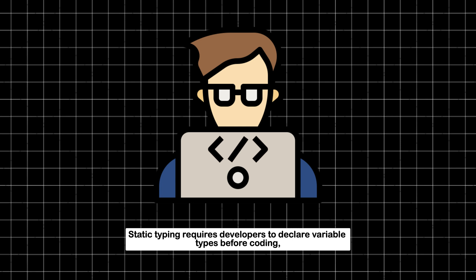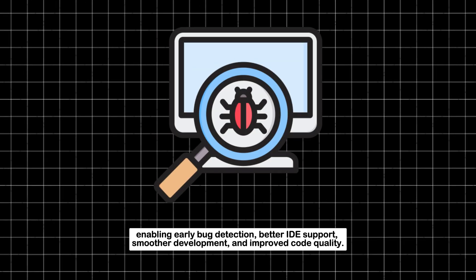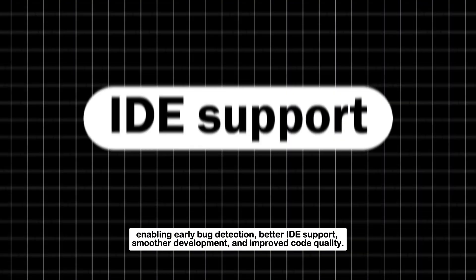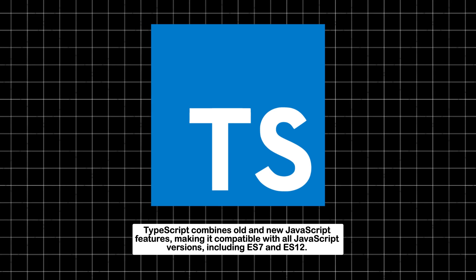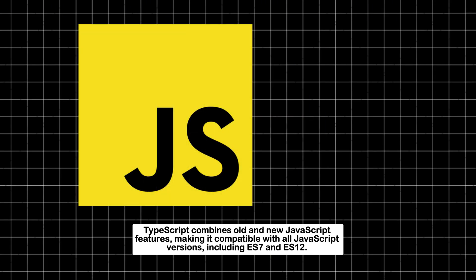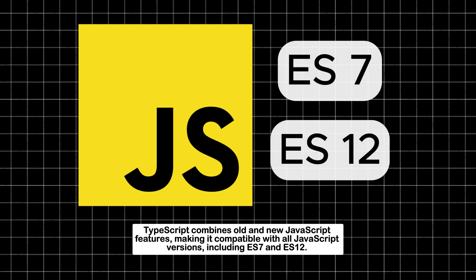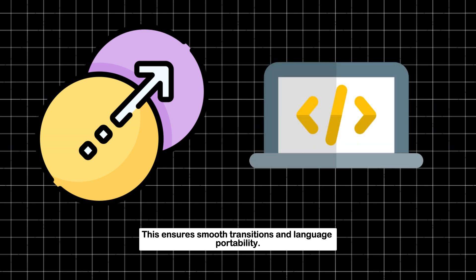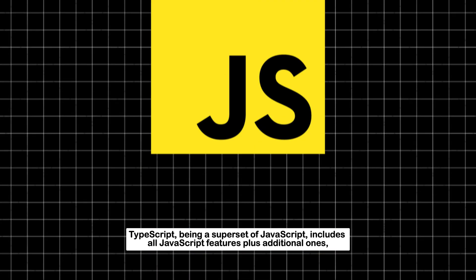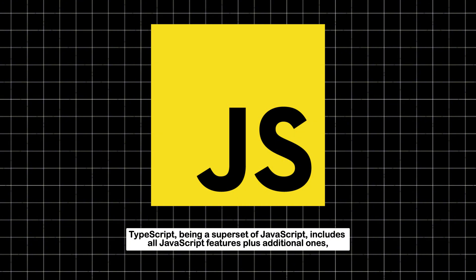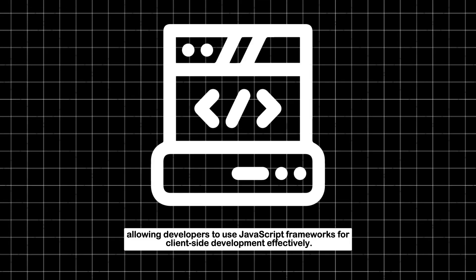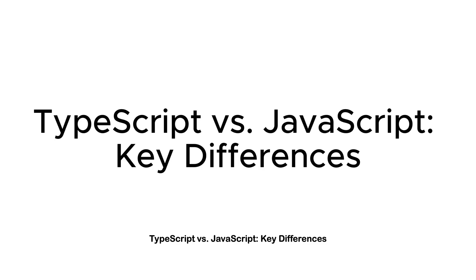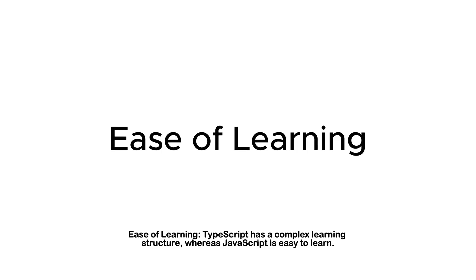TypeScript features: Static typing requires developers to declare variable types before coding, enabling early bug detection, better IDE support, smoother development, and improved code quality. TypeScript combines old and new JavaScript features, making it compatible with all JavaScript versions including ES7 and ES12. Being a superset of JavaScript, TypeScript includes all JavaScript features plus additional ones, allowing developers to use JavaScript frameworks for client-side development effectively.